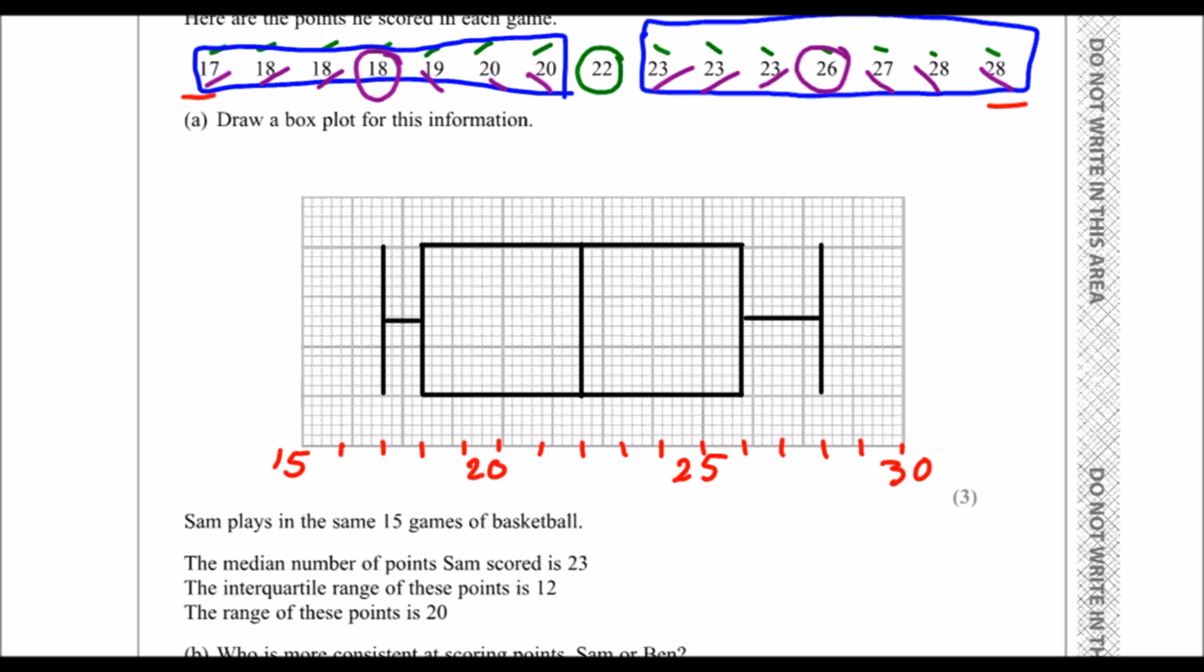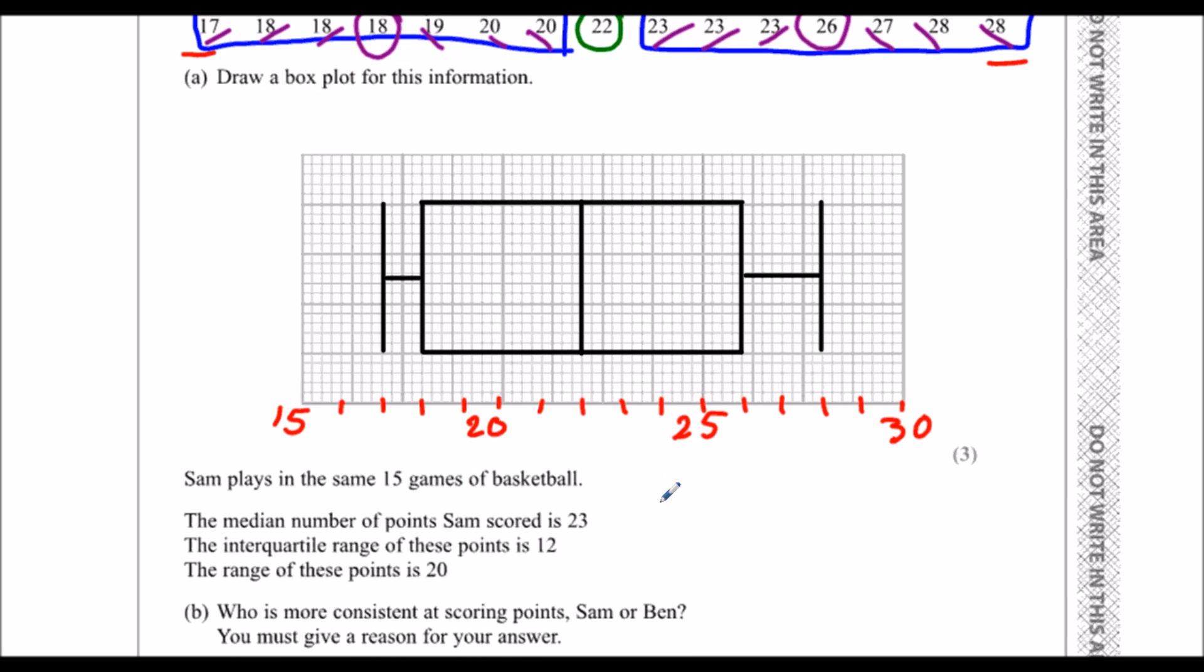So Sam plays the same 15 games of basketball. His median was 23. So Ben's was 22. His interquartile range was 12. So that's the gap between the two quartiles. So the upper quartile take away the lower quartile. 12 take away 18. Ben's was 8. And his range was 20. 28 take away 17. Ben's was 11.